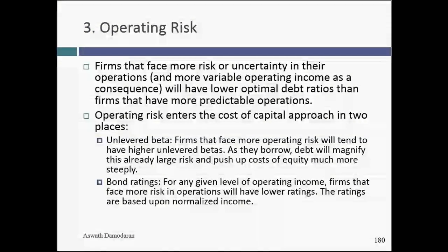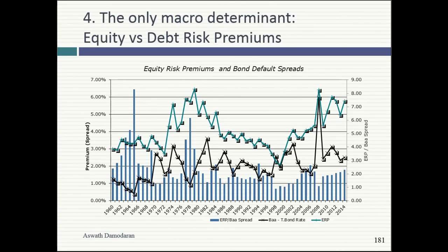The third factor is the unlevered beta. The higher the unlevered beta of your business, the more wary you should be about borrowing, because everything gets magnified very quickly. It's a risky business — the common sense thing is the last thing you want to do is add to your risk by borrowing money on top of it.